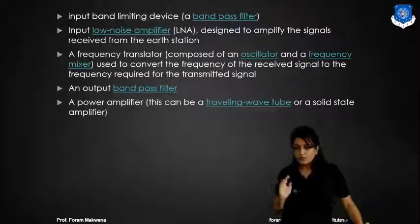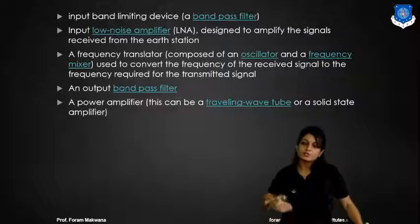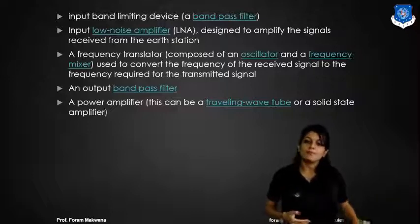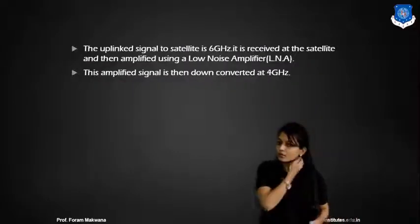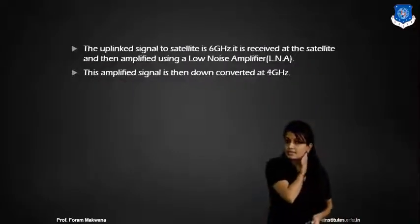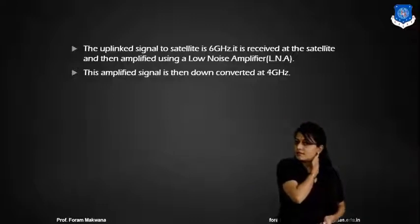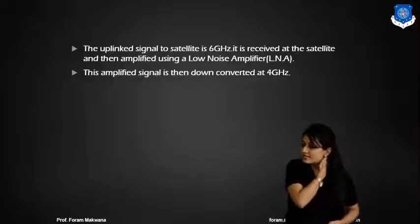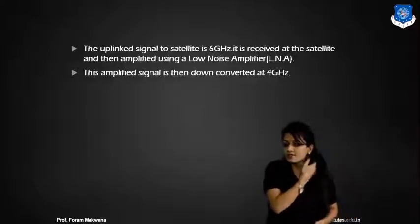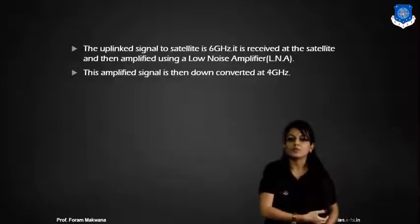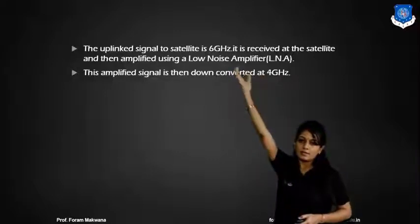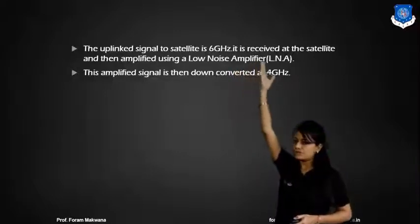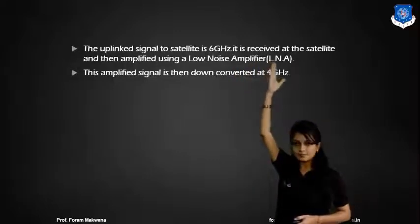The output is passed through a bandpass filter and then amplified by the power amplifier. The uplink signal is designed in such a way that it transmits the frequency signal at a frequency of 6 GHz.